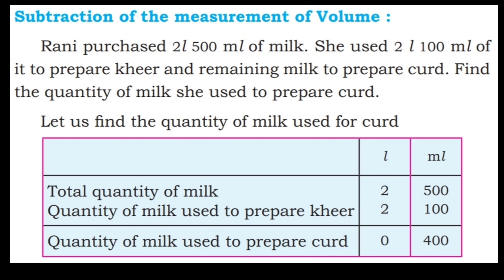Rani purchased 2 liter 500 ml of milk. She used 2 liter 100 ml of it to prepare kheer and the remaining milk to prepare curd. Find the quantity of milk she used to prepare curd. Let us find the quantity of milk used for curd.